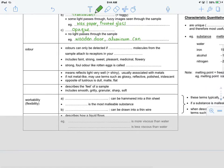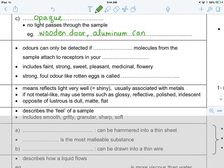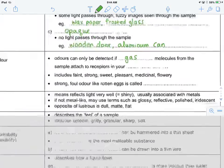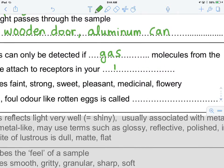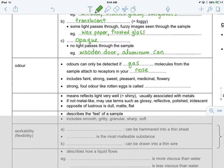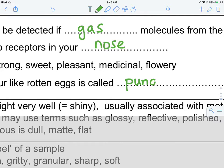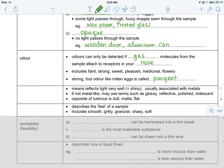Alright, another physical property moving down this list is odor. Odors can be detected only if gas molecules from the sample attach to receptors in your nose. The only time we smell something is if there are gas molecules being released from the substance. This includes smells like faint or strong, sweet, pleasant, medicinal, flowery, and strong foul odors, like rotten eggs. That is described as being pungent. Ammonia would be another smell that we would describe as being pungent.